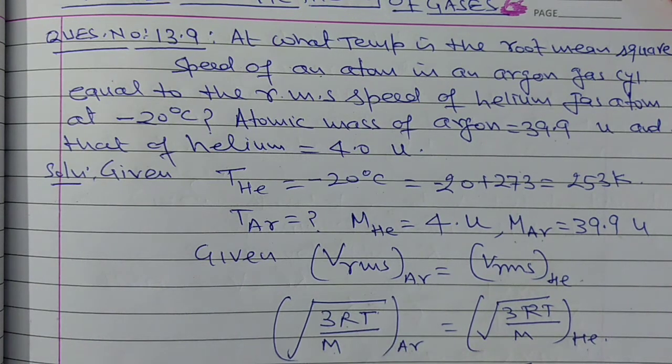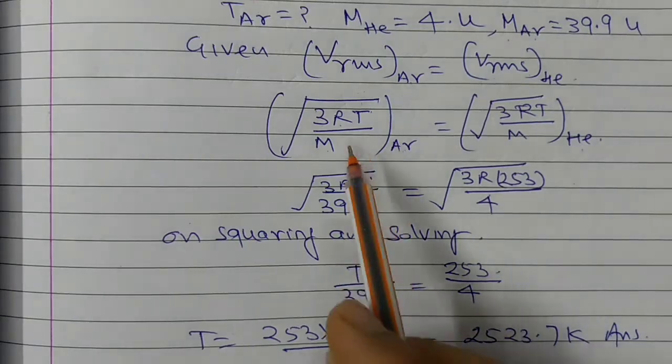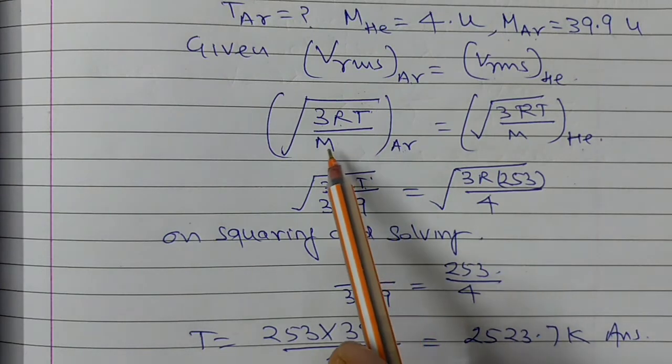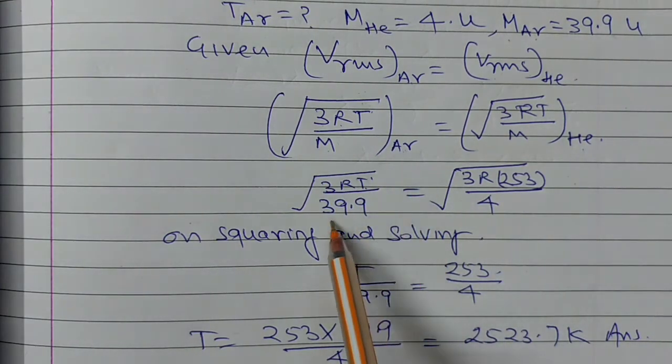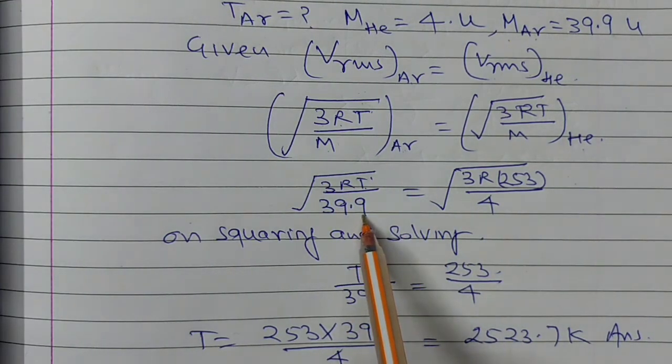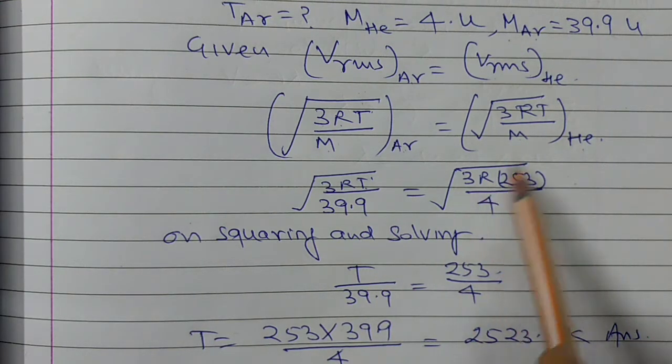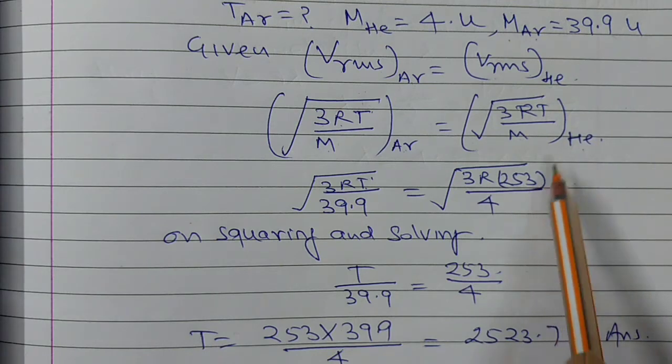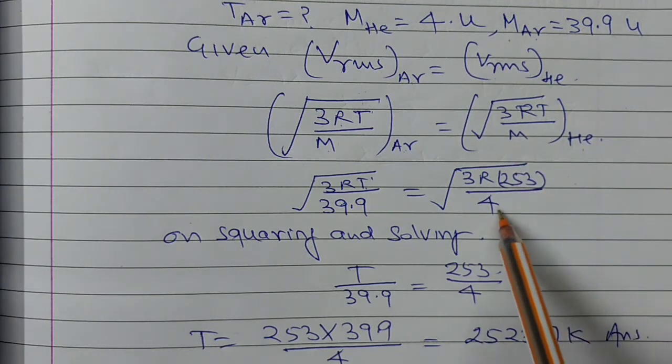Now substituting values: 3 into R, T, and the molecular mass of argon is 39.9. And here also, 3 into R, temperature of helium is 253 Kelvin, and the molecular mass of helium is 4.